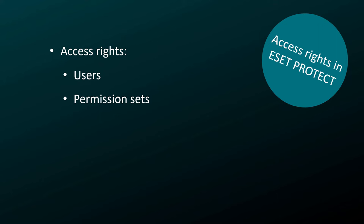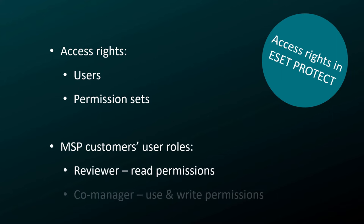Permission sets define what the user can do or see in the web console. Asset Protect allows setting up permission sets with a high degree of granularity. In the MSP world, we usually recognize two types of customer users. The first one is the reviewer, a user that only has read access — they can see the status of computers in the network and optionally generate reports, but are not allowed to take any action. The other one is the co-manager, a user with strong permissions that allow them to actively participate and assist the MSP admin in managing their company network.